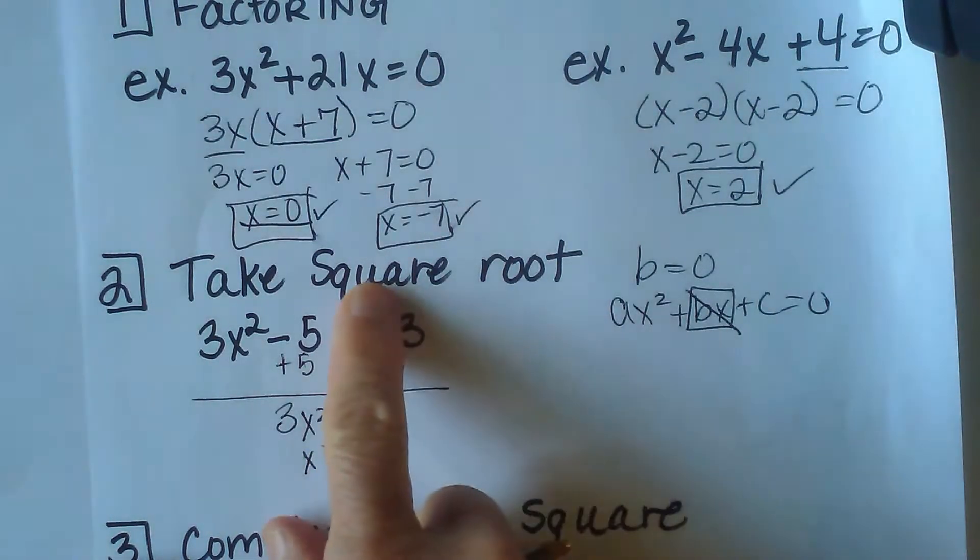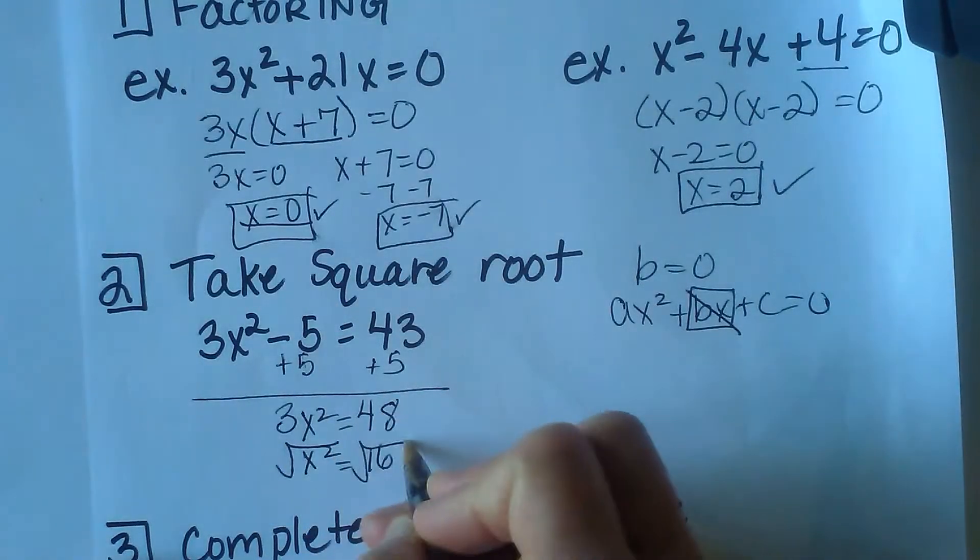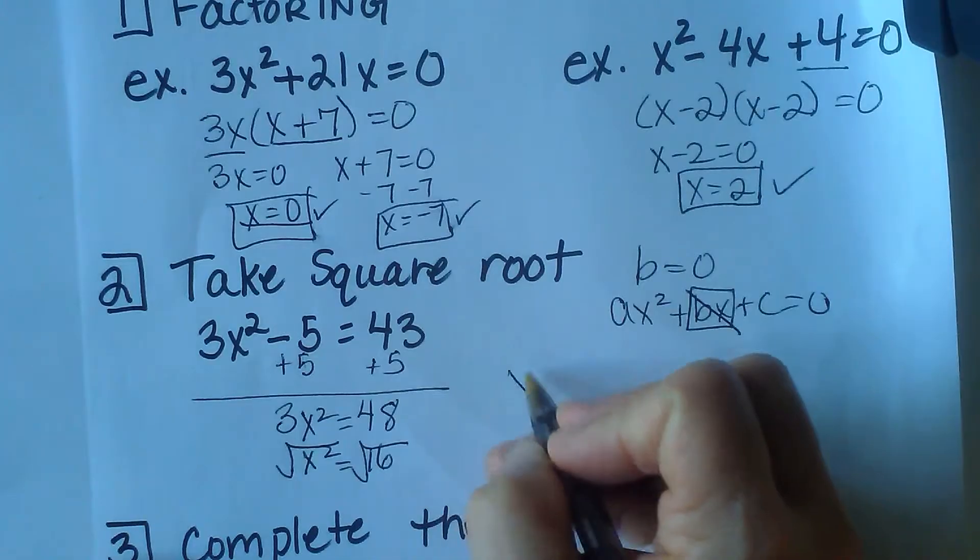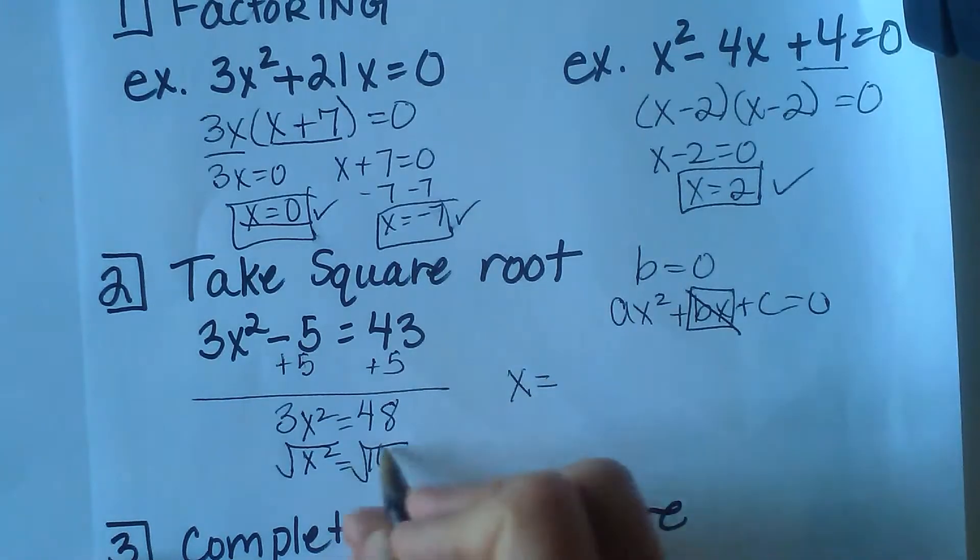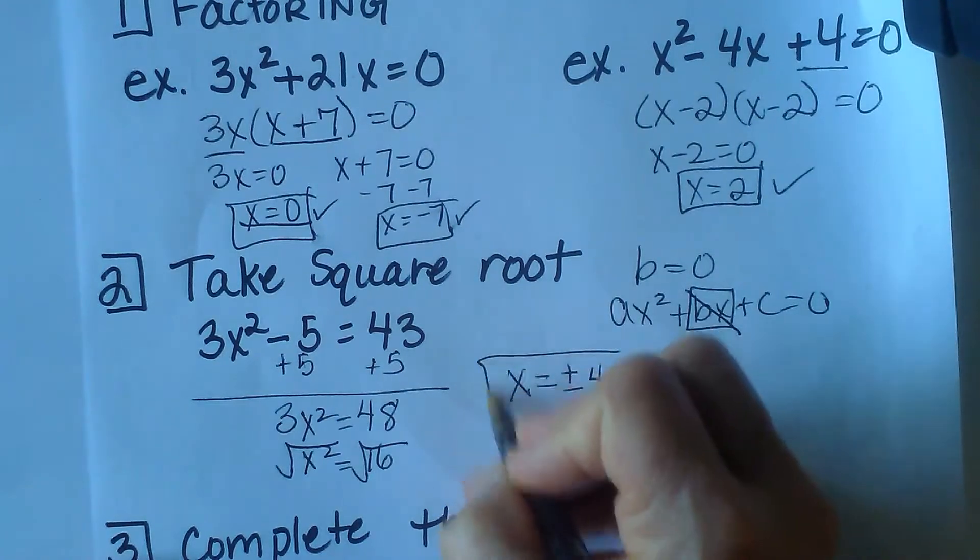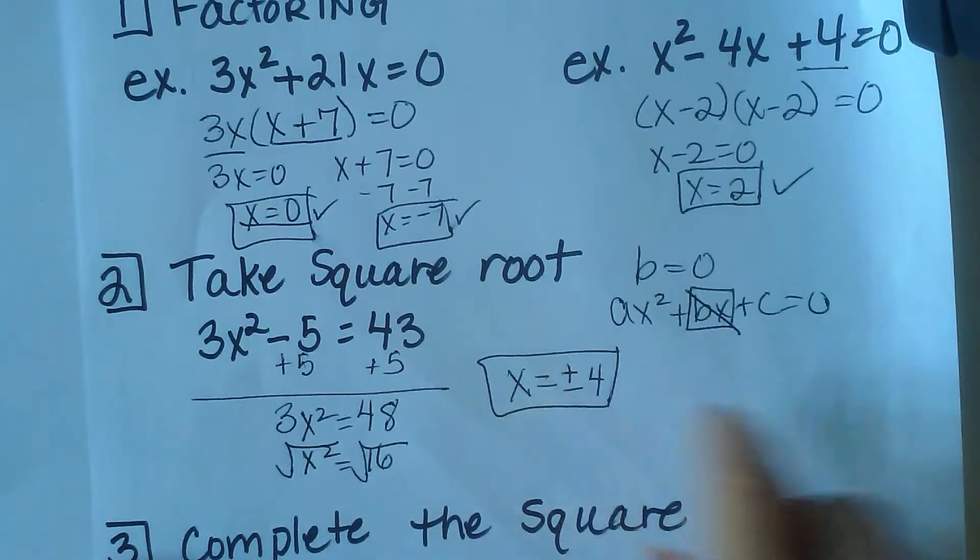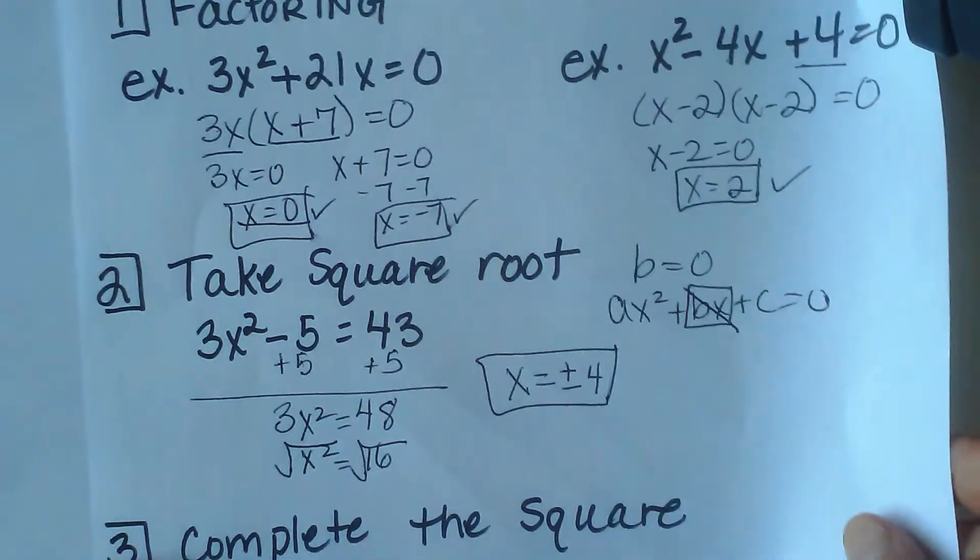The square root of x squared is just x. The square root of 16, you have to be careful. You have two solutions, both a positive and a negative 4, because 4 squared is 16, and negative 4 squared is also 16. So that one has two solutions.